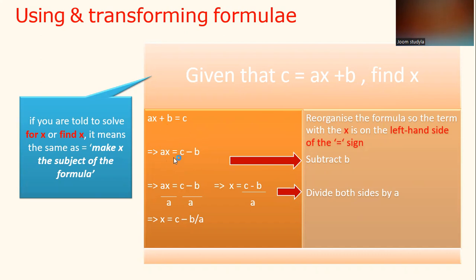AX equals C minus B. When we transfer B over, plus becomes minus. Then we divide both sides by A. AX divided by A, C minus B divided by A. So you get X equals C minus B divided by A.